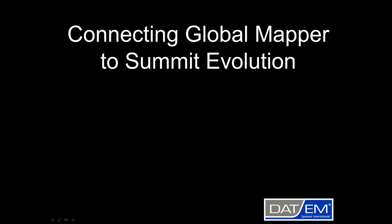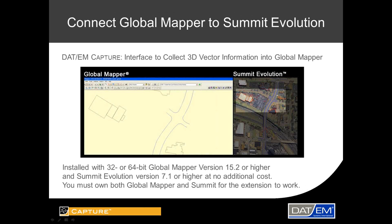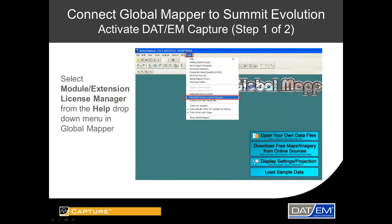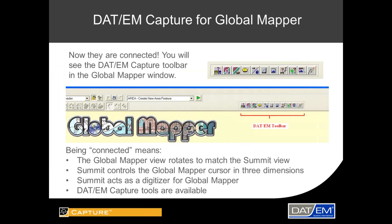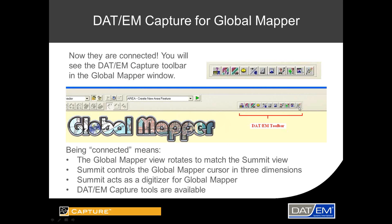Connecting Summit Evolution to Global Mapper is a pretty simple process. When we install our software, we check if you have Summit and Global Mapper version 15.2 or higher on the machine. If you do, we install our extension. Then it's your choice to use the extension or not. Once you install our software, when you go to the Module Extension License Manager that David showed earlier, you'll notice a Datum Capture for Global Mapper extension available. When it's checked on, you get our toolbar added to your Global Mapper environment.